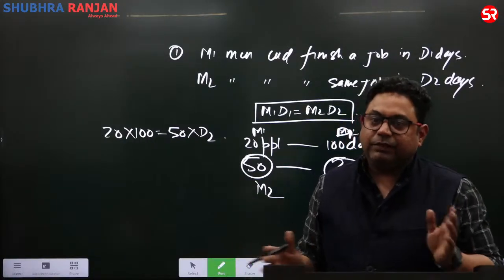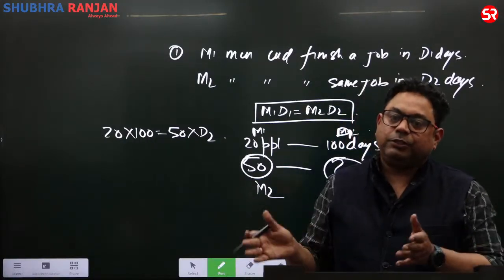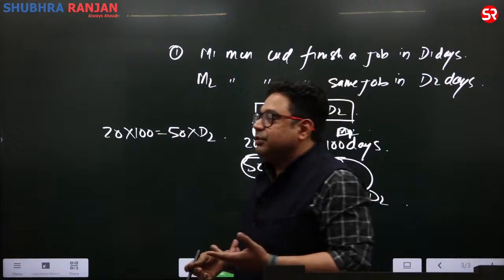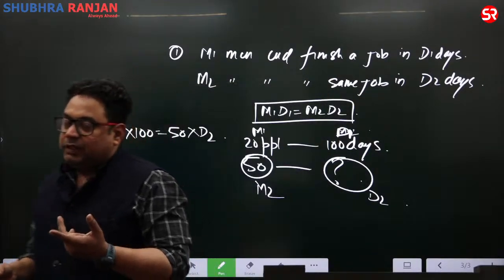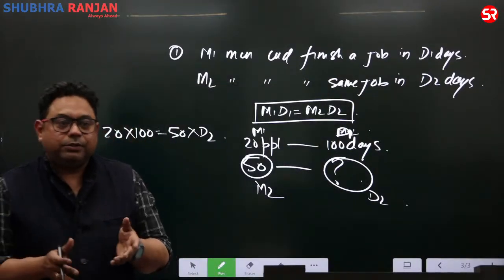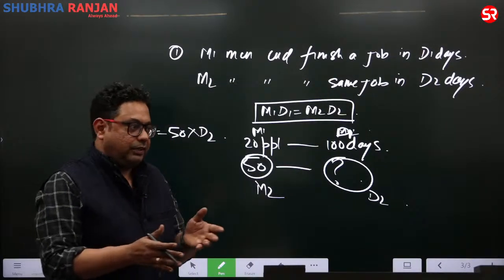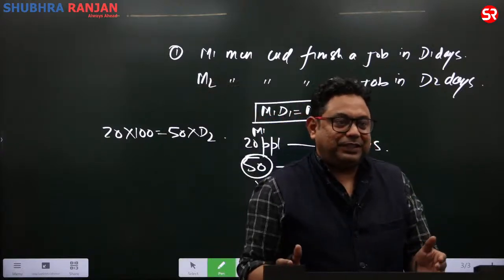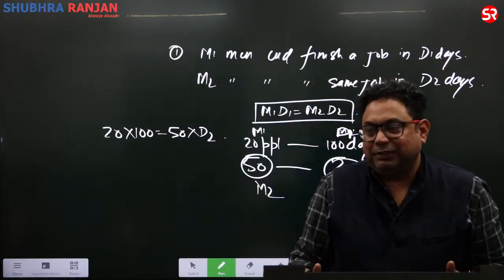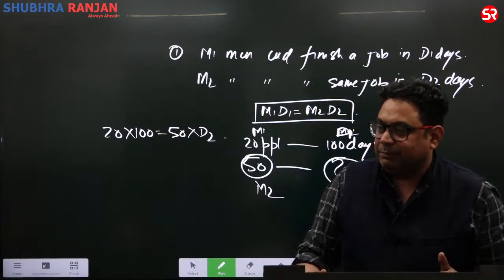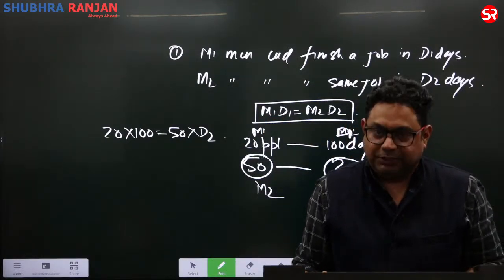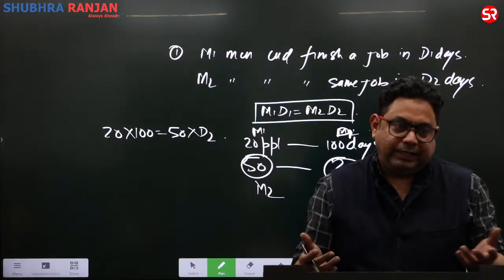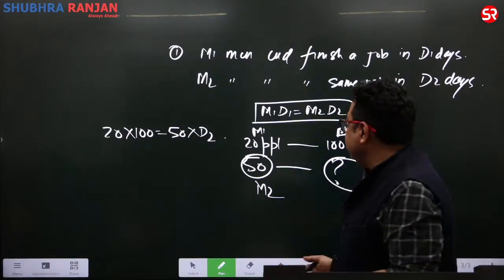Point number one is M1 into D1 equals M2 into D2. Point number 2: M1 men finish a job in D1 days working T1 hours per day, and M2 men finish the same job in D2 days working T2 hours per day. One more component of hourly work comes into play.